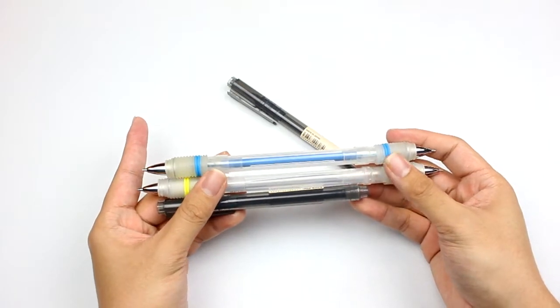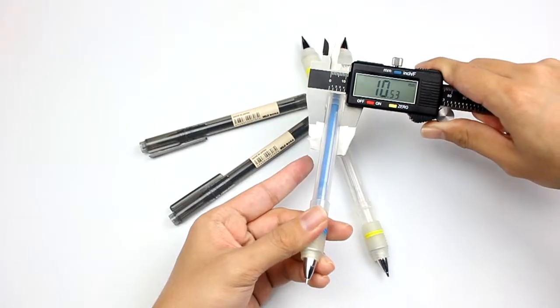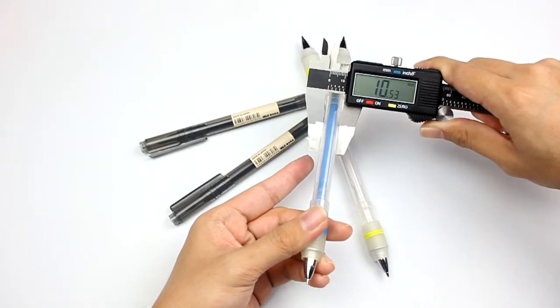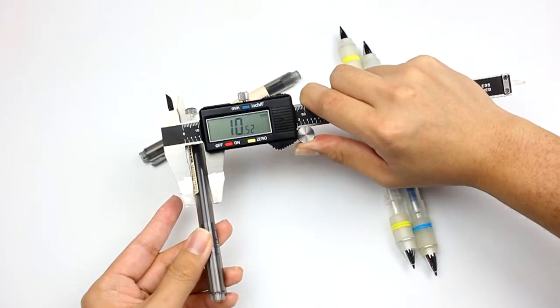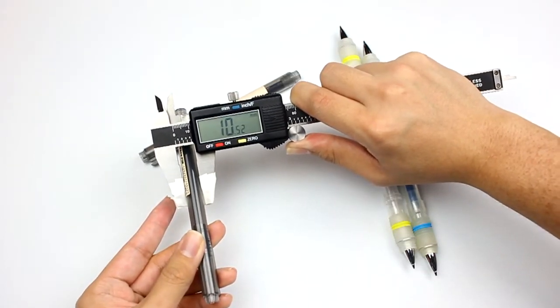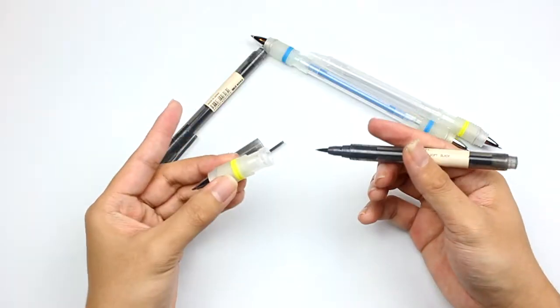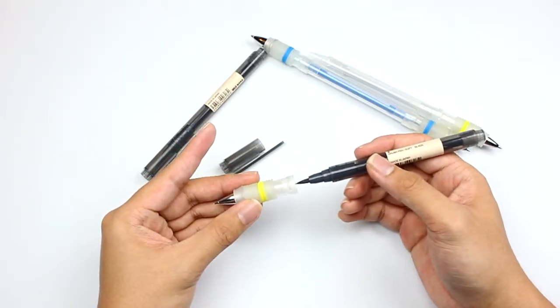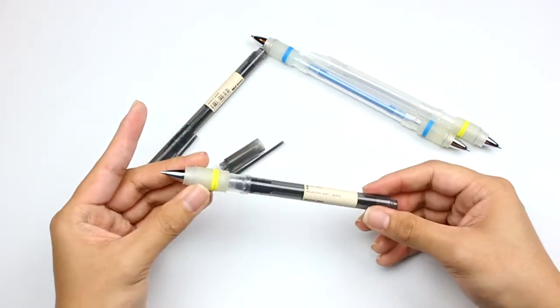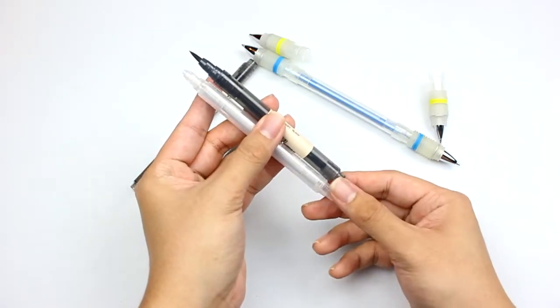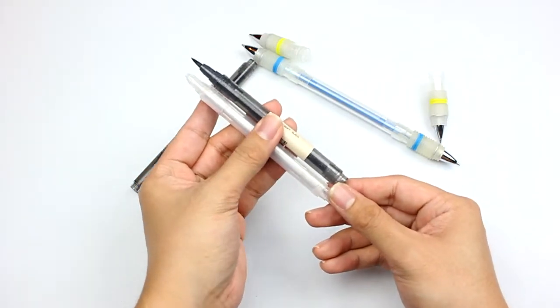These pens are actually tinted Rimet bodies. As you can see, the Rimet body is 10.5mm, and these tinted calligraphy pens are also 10.5mm. Rimet caps also fit on these calligraphy brush pens. The calligraphy brush pen is also the same length as the Rimet body.